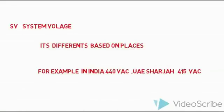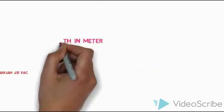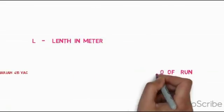In India, there is 440 to 450 voltage. In DC, there is a different voltage. So let's talk about the right output — the length in meters can be set.